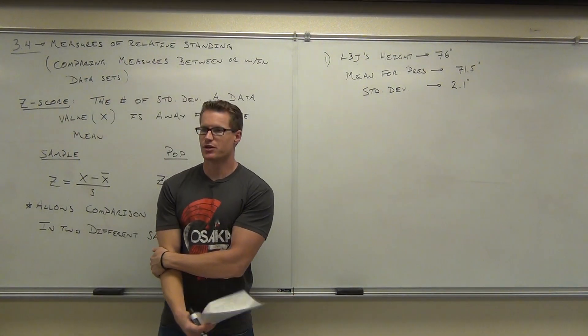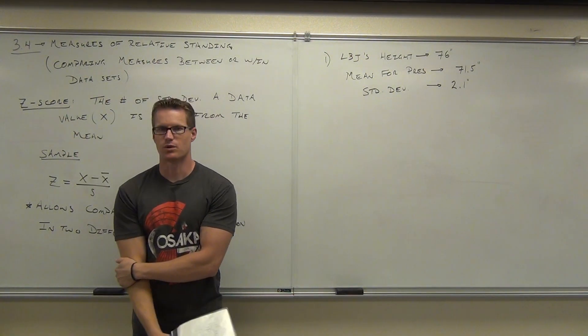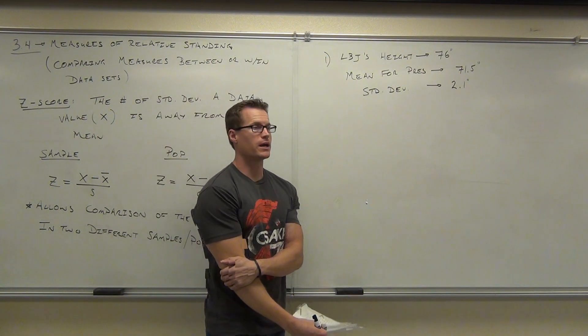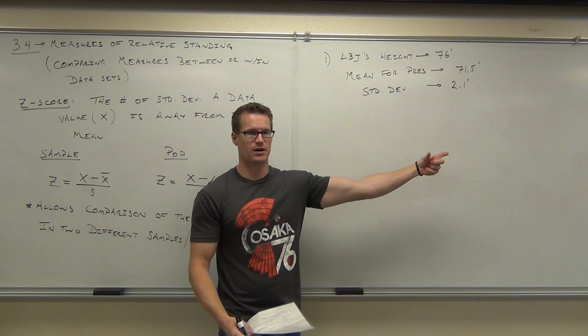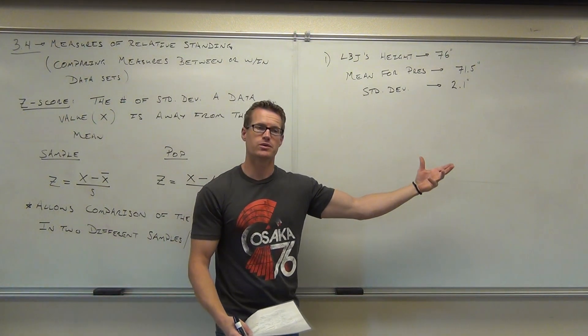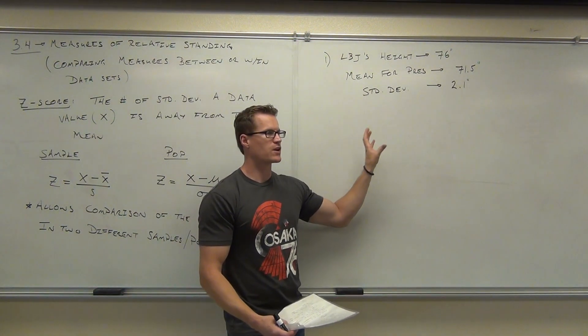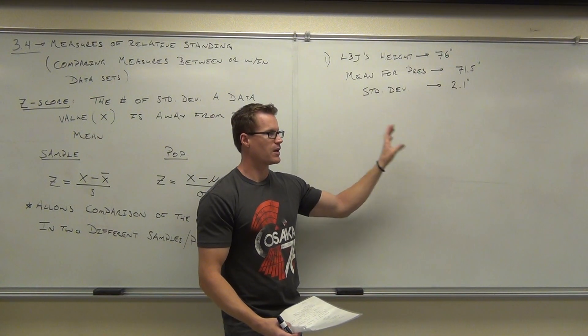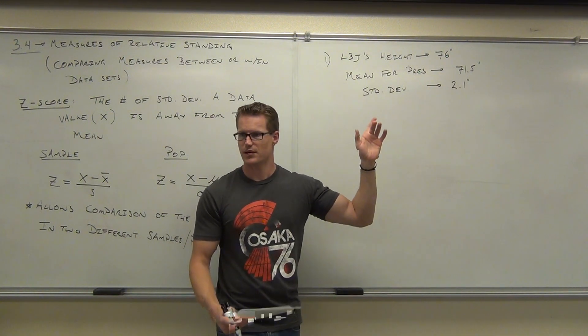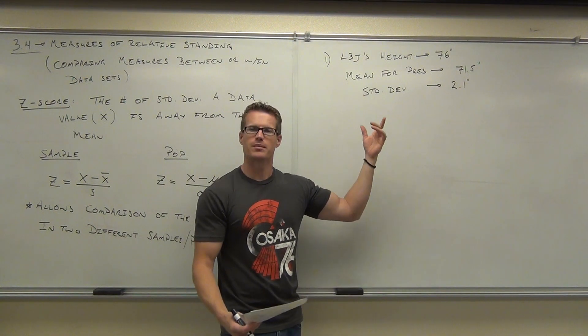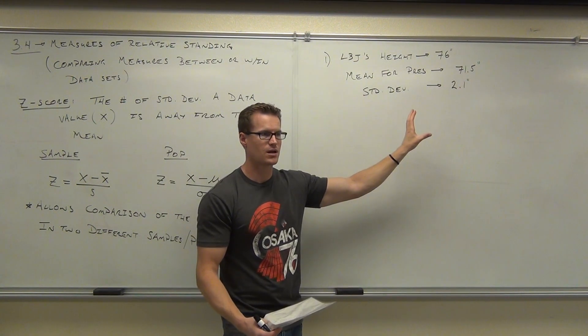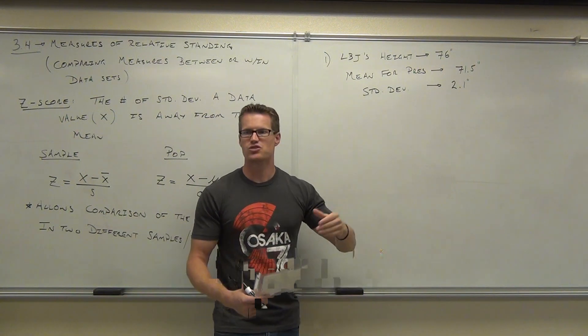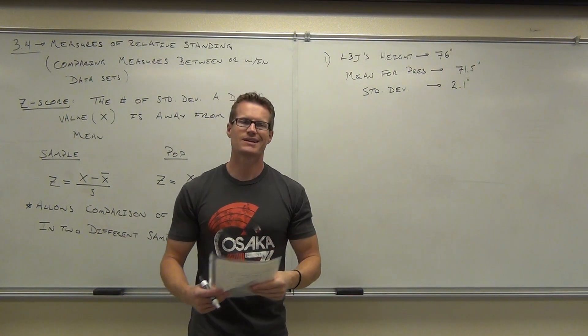That's all the information we're going to need to be able to calculate what's called the z-score. To calculate how far away Lyndon B. Johnson is from the president's average height. To see how far he deviates. Because we want to figure out, is this rare? Or is this normal? Is it usual? And then we can compare his z-score to Shaq's and see which one is relatively taller.